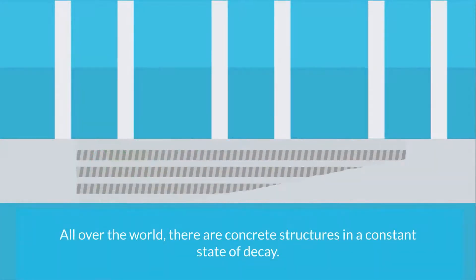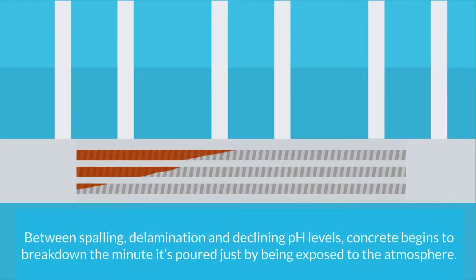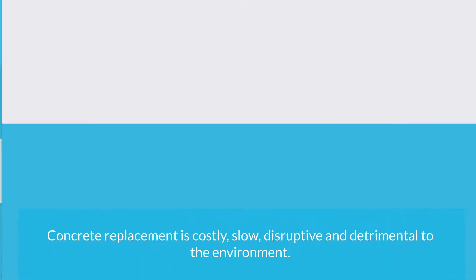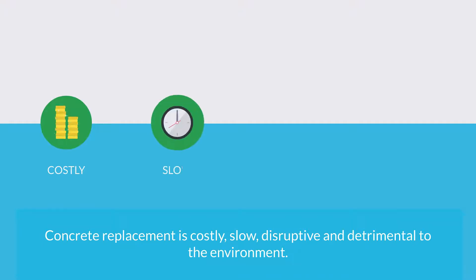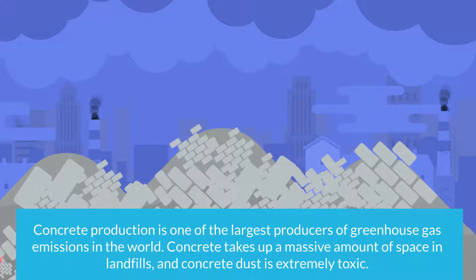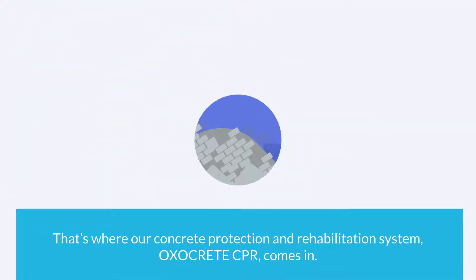All over the world there are concrete structures in a constant state of decay. Between spalling, delamination, and declining pH levels, concrete begins to break down the minute it's poured, just by being exposed to the atmosphere. Concrete replacement is costly, slow, disruptive, and detrimental to the environment. Concrete production is one of the largest producers of greenhouse gas emissions in the world, takes up a massive amount of space in landfills, and concrete dust is extremely toxic.